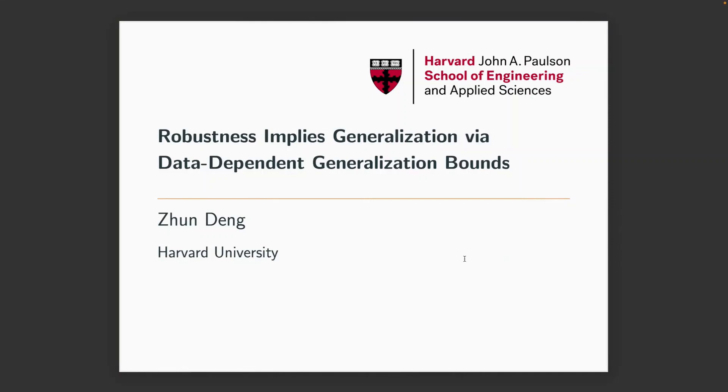My name is Jun Dun and I'm an incoming postdoc at Columbia University. I graduated from Harvard recently. Today I'm going to talk about our work on an improved analysis for robustness and generalization balance. Specifically, we will show robustness implies generalization via stronger data-dependent generalization bounds.